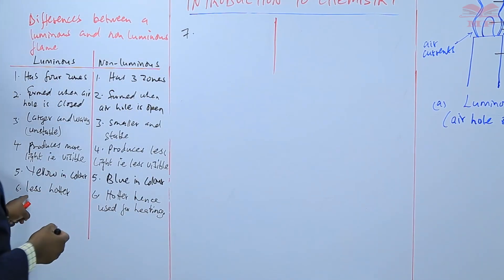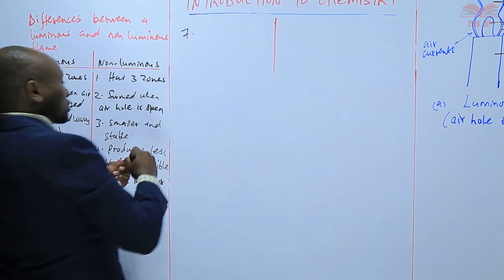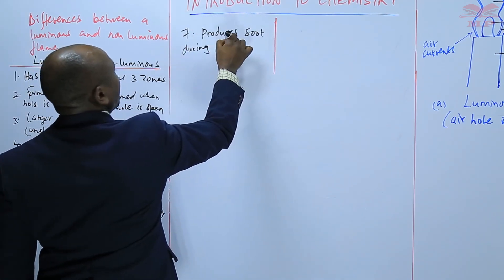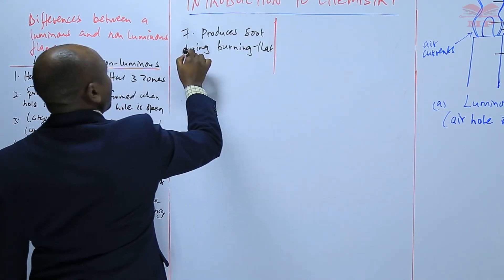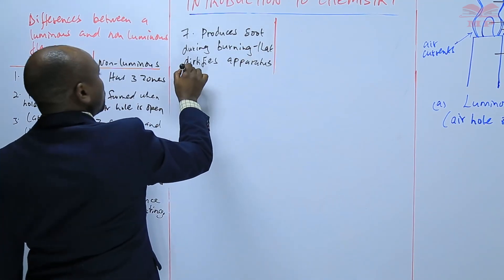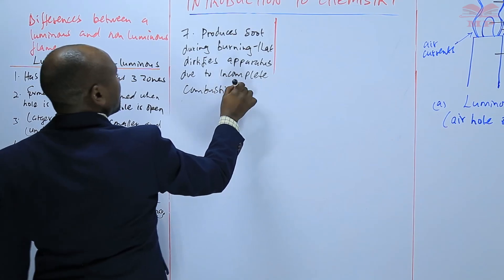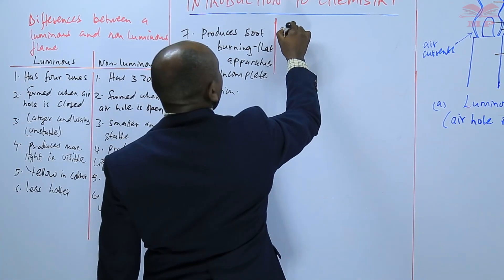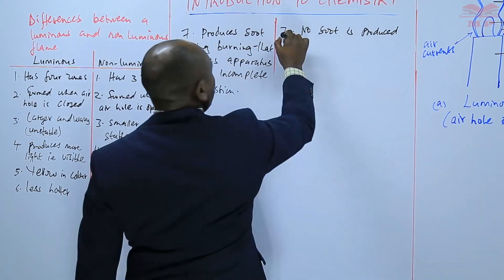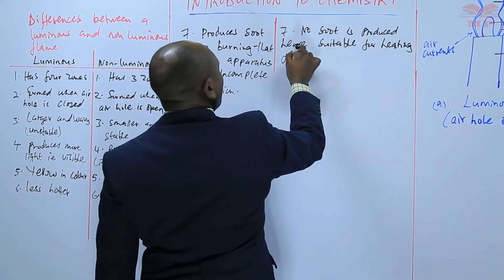Luminous flame — because of lack of air there is incomplete combustion, and therefore it produces soot during burning. That soot dirties apparatus. This is due to incomplete combustion. In the case of the non-luminous flame, no soot is produced, hence suitable for heating, due to complete combustion.